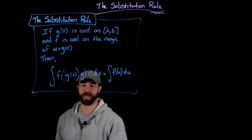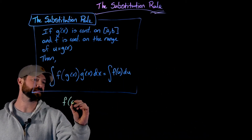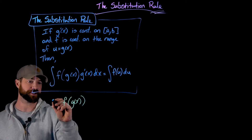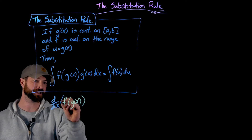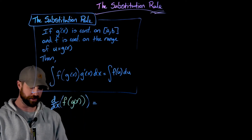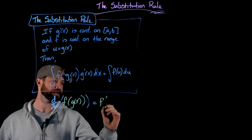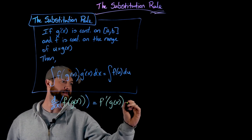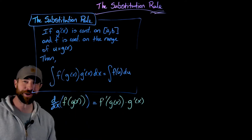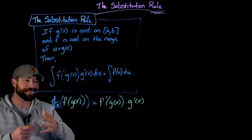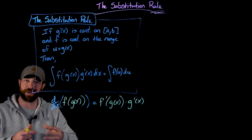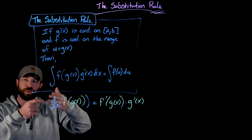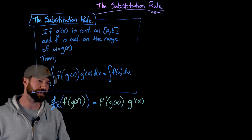With the chain rule, if we have functions composed together — g inside of f — and we differentiate with respect to x, what we get is the derivative of the outer function with respect to the inner function, times the derivative of the inner function. This also works for more than two composed functions — a bunch of nested functions — where you apply the chain rule on each outer function around the inner functions all the way down.